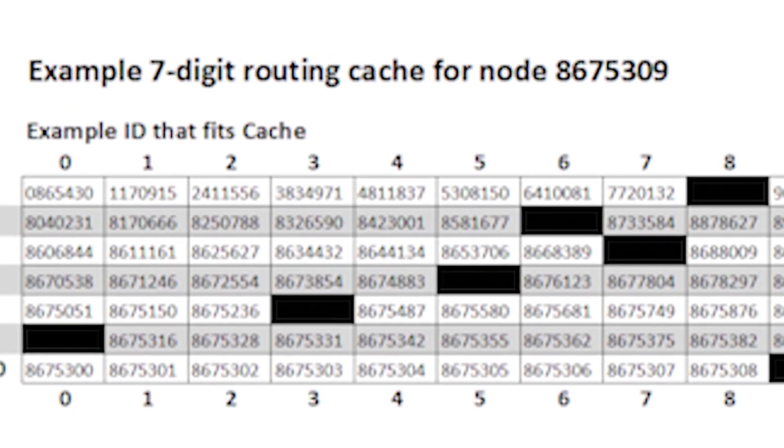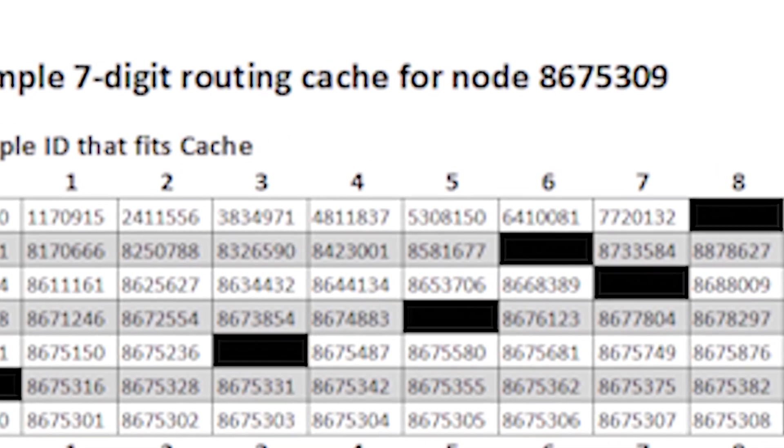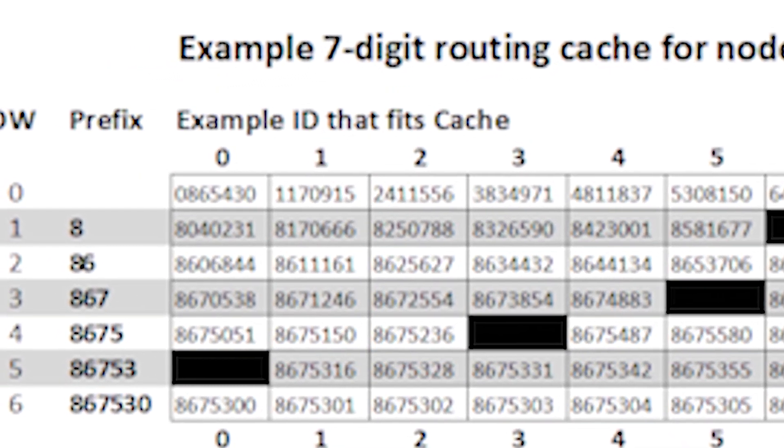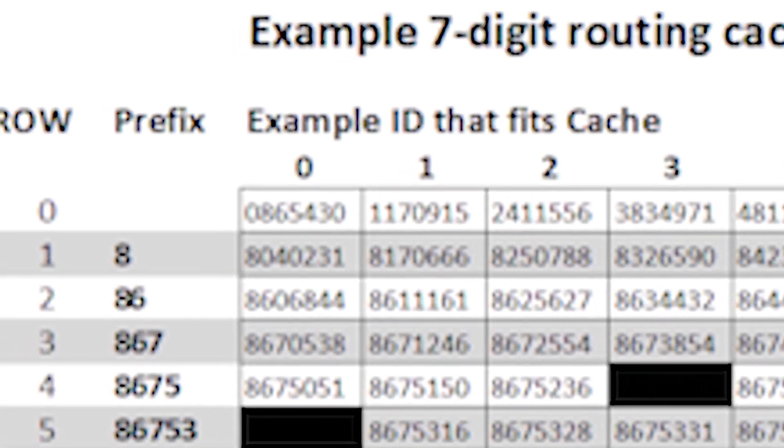So let's say your node ID is 867-5309. In row 0, entries share a 0-length prefix with your ID — in other words, no common digits; the phone number begins with any digit other than 8. In row 1, every node ID you cache begins with the same first digit as yours, 8, but the second digit is different — so 80, 81, 82, and so on through 89. This special structure ensures that when you receive a message to forward that matches part of your prefix, you can get at least one digit closer to the target ID. In other words, it requires log base 10 of the number of nodes in the system hops to reach any destination. If every 7-digit ID is used, there are 10 million nodes, and it takes log base 10 of 10 million, or 7, hops to reach the target.